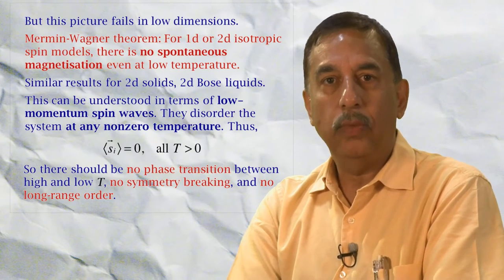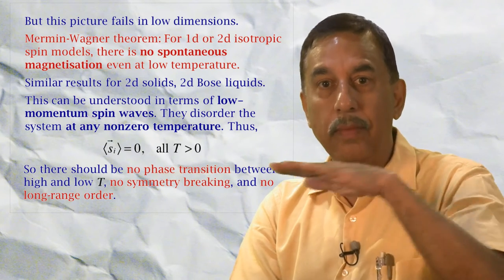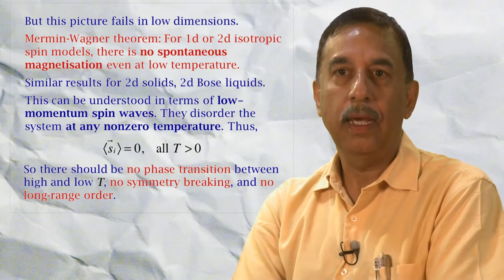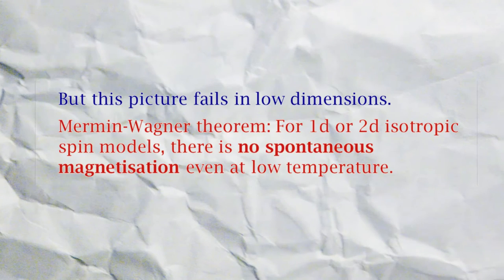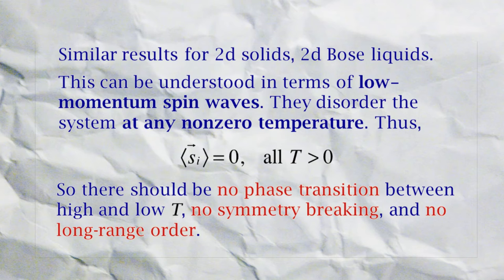But this picture, which works in three-dimensional solid bodies, fails in low dimensional systems which are either two-dimensional on a surface or one-dimensional along a line. In such systems, something different happens, and this kind of phase transition is not even possible. It is ruled out by a theorem of Mermin and Wagner, which says there is no spontaneous magnetization at low temperature. There are ways to understand this in terms of low momentum spin waves which disorder the system at all temperatures. And the conclusion would be that there is no phase transition, no symmetry breaking, and no long range order at low temperatures.